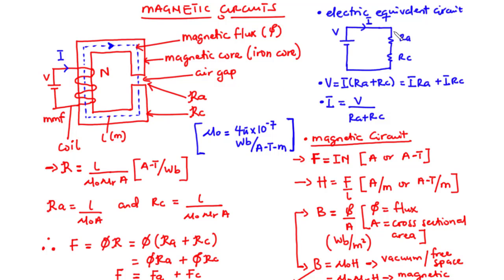Now let's focus on the electric equivalence of this circuit. We have a voltage source V driving current I through the circuit, and the resistance of this circuit is made up of the resistance of the air gap as well as the resistance of the iron core. The applied source voltage equals the current times the total resistance — that is according to Ohm's law — giving us I×R_A plus I×R_C. The voltage dropped across the circuit equals the source voltage, according to KVL.